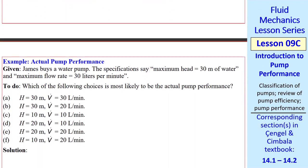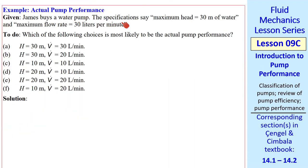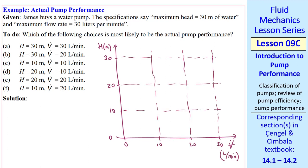I'll do another quick example. James buys a water pump. The specifications on the box say that the maximum head is 30 meters of water, and the maximum flow rate is 30 liters per minute. Which of the following choices is most likely to be the actual pump performance? I'll sketch H versus V dot, where H is in meters, and V dot is in liters per minute. I also sketched some grid lines.